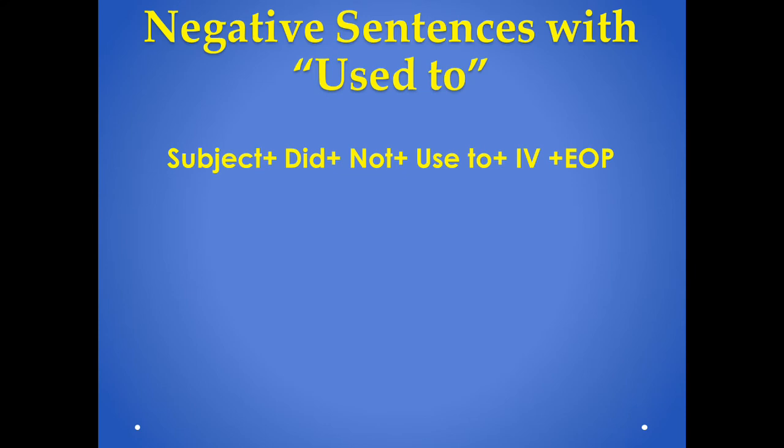For making a negative sentence with used to, you simply use first of all subject, then did, then not, then use to. Okay?